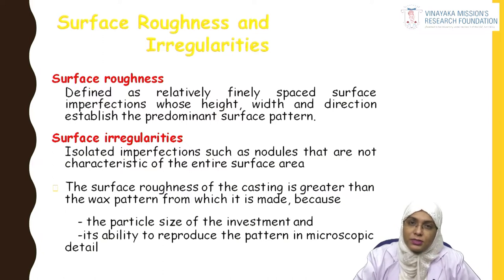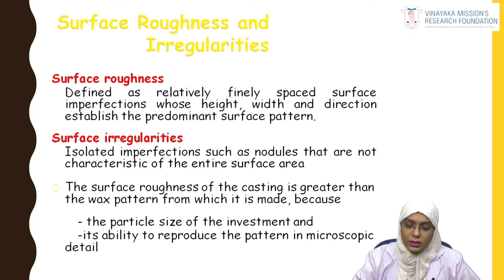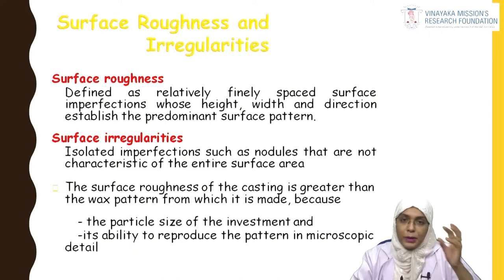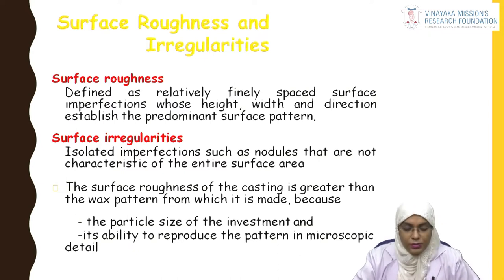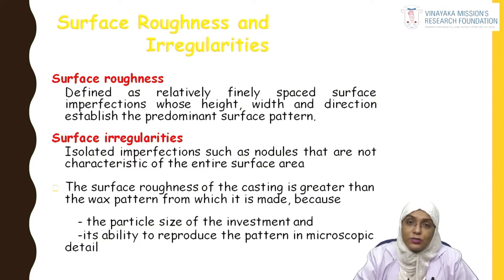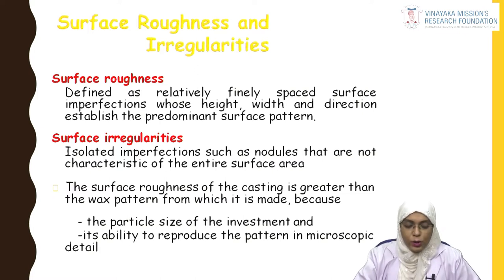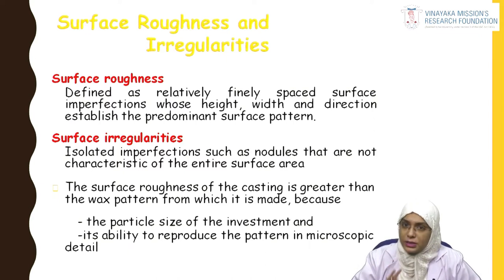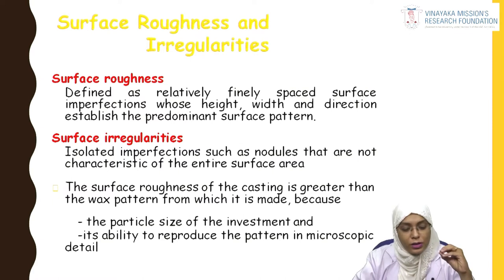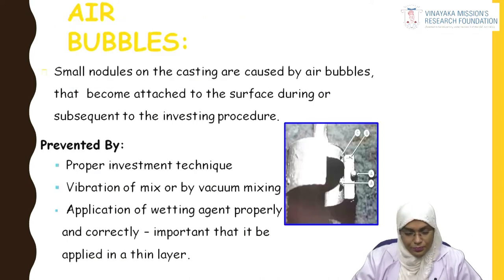The second common defect is surface roughness or irregularities. Surface roughness refers to any changes in height, width, and direction of the pattern. Surface irregularities are imperfections in the form of nodules, which are not characteristic of the entire surface — only in certain regions. Surface irregularities are prominent due to the particle size of the investment and the ability to produce the pattern in microscopic detail, which tends to be further magnified in the casting.